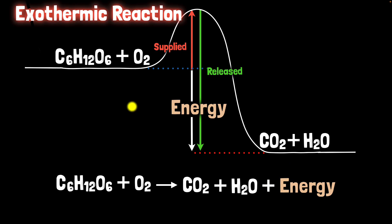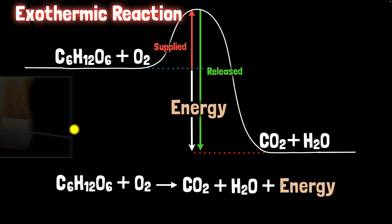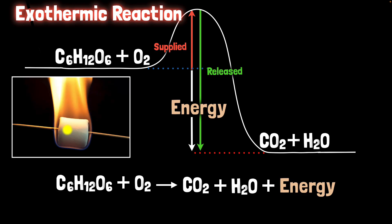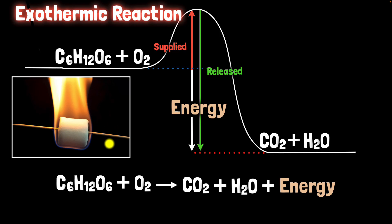And where is this energy coming from? Well, it was stored in the reactants — that energy is being released. And that's exactly what happens when you are burning a marshmallow. By the way, this particular reaction is called a combustion reaction. When you're burning a marshmallow, basically the oxygen and the sugar react to give you carbon dioxide and water, and in the process a lot of energy is released.